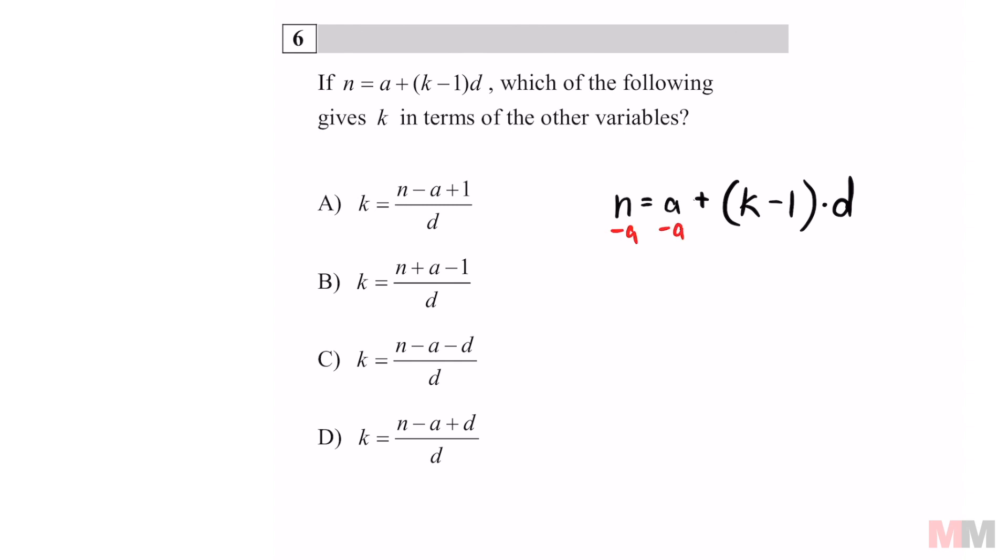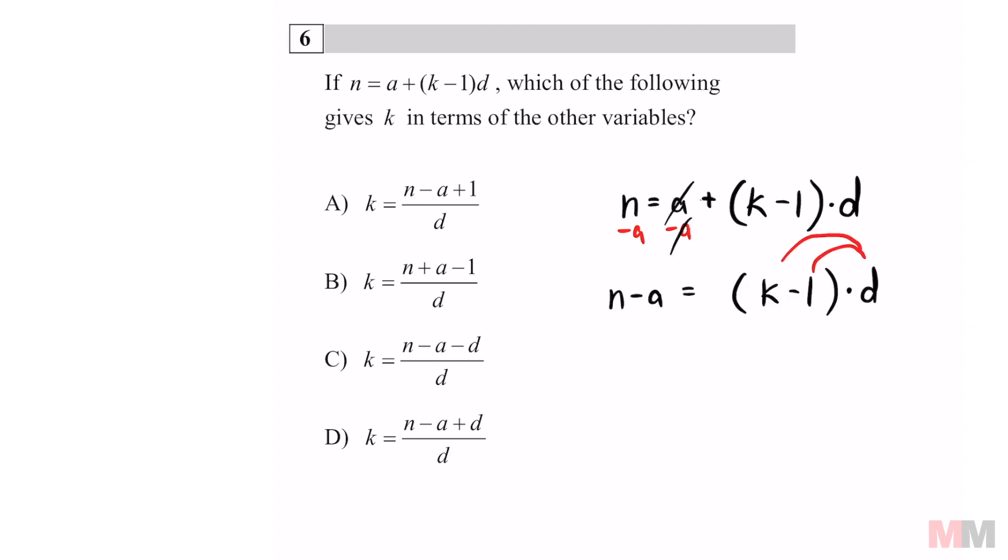Subtracting an A. That's not too bad. I got N minus A equals K minus one times D. Distribute the D to the terms in the inside. D K minus one D. Add one D to both sides. You get N minus A plus one D.